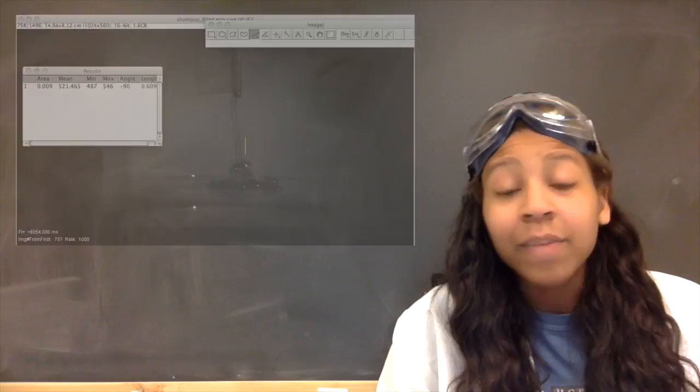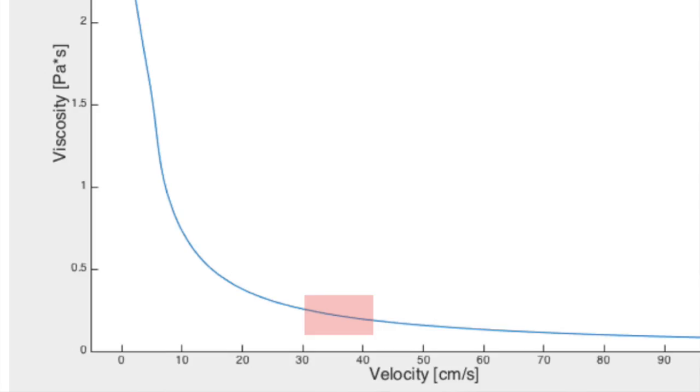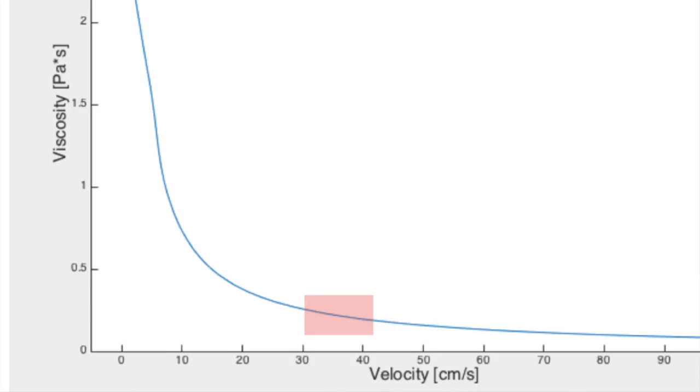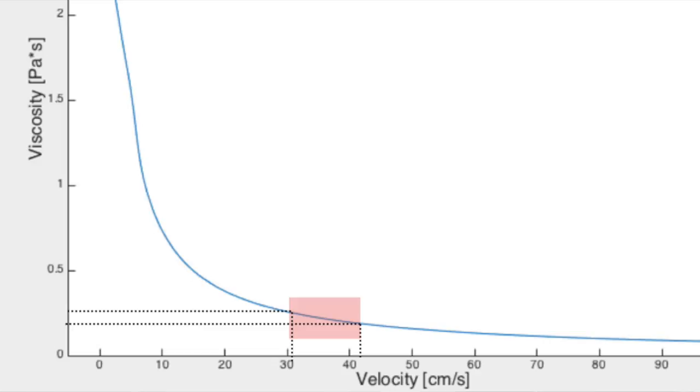Then, we used a rheometer to empirically determine the relationship between shear rate, which is directly proportional to the velocity, and the viscosity of our shampoo. We found that the threshold velocity corresponded to a viscosity of about 0.2 Pa seconds.